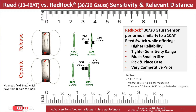I'll spend a little extra time on the second slide to orient you, as the subsequent slides follow the same layout. Shown are the distances between the reed and RedRock sensor using a typically used N42 Neodymium magnet for both release and operate sensitivity limits. In this scenario, the sensitivity of the reed switch is 10-40 AT, which is quite common in the industry. The sensitivity for the RedRock sensor is 30-20 Gauss.